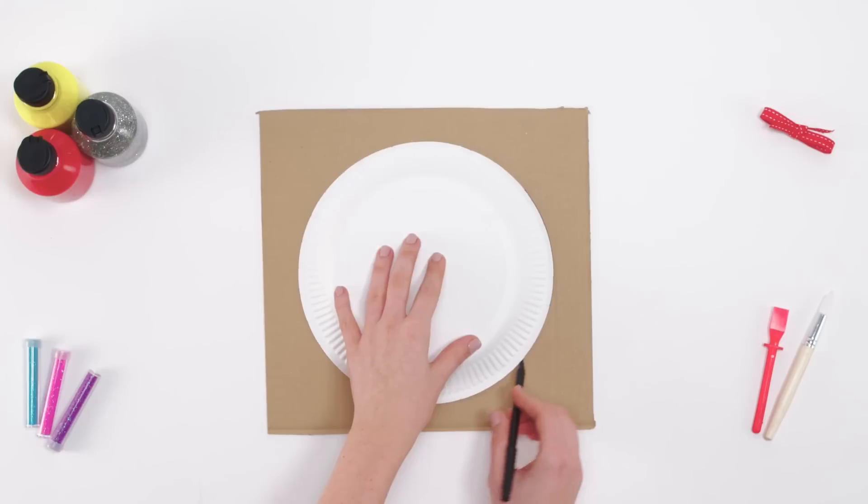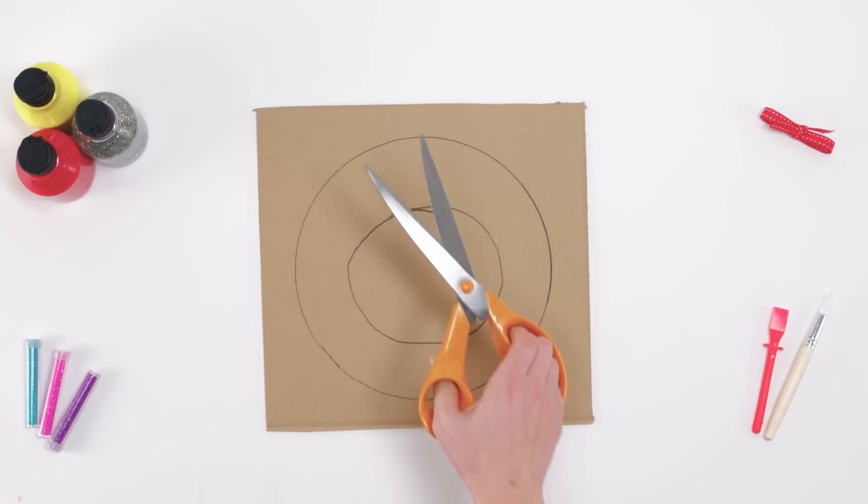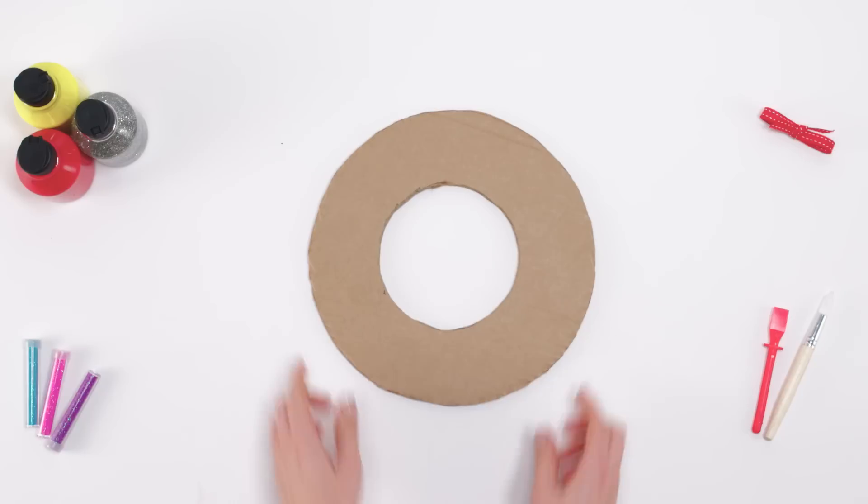To start, draw around a plate on a piece of cardboard. Draw a smaller circle inside, then cut out the inner circle.